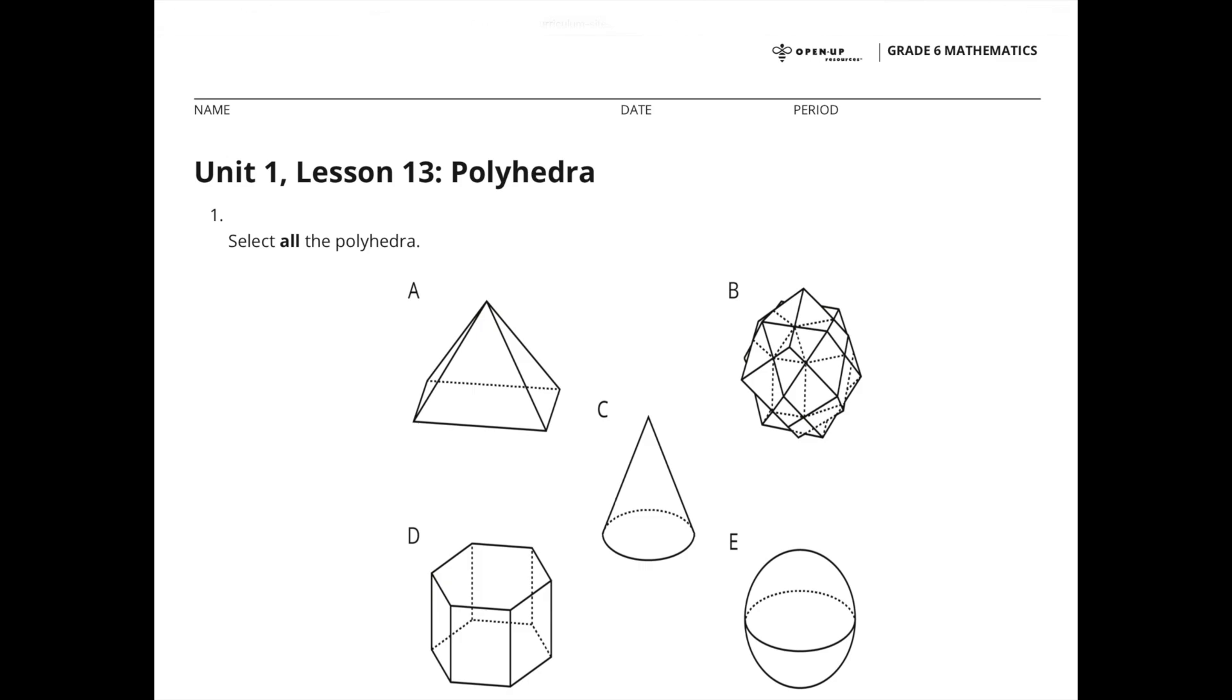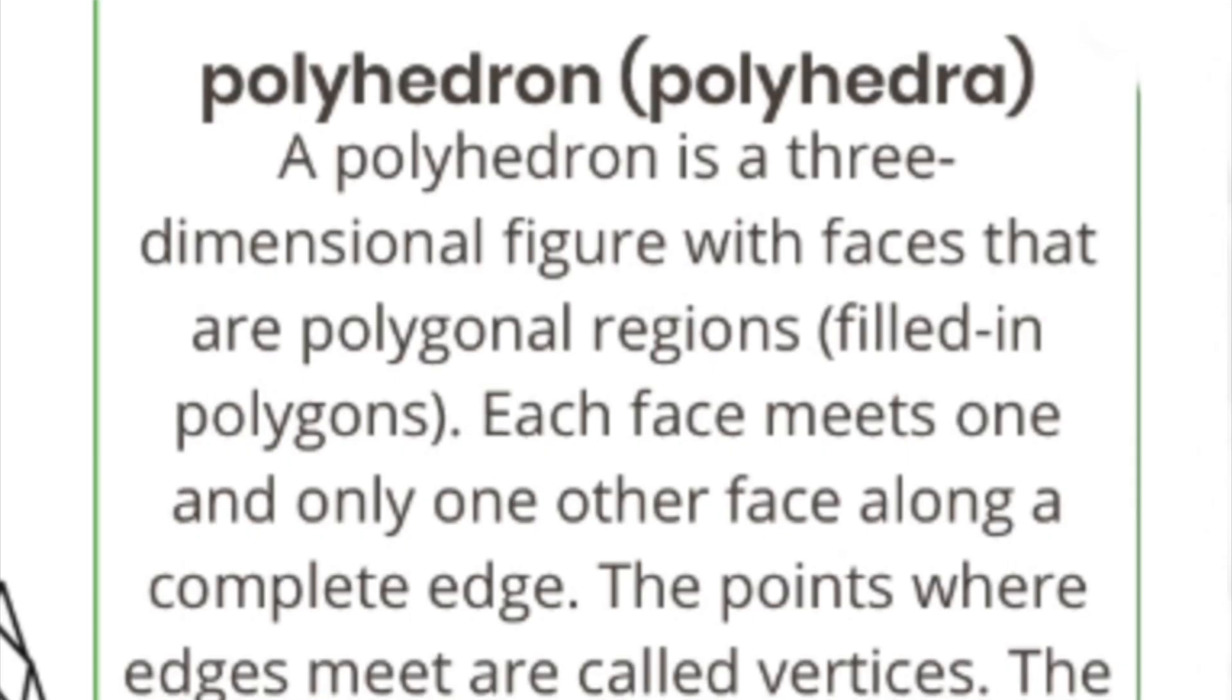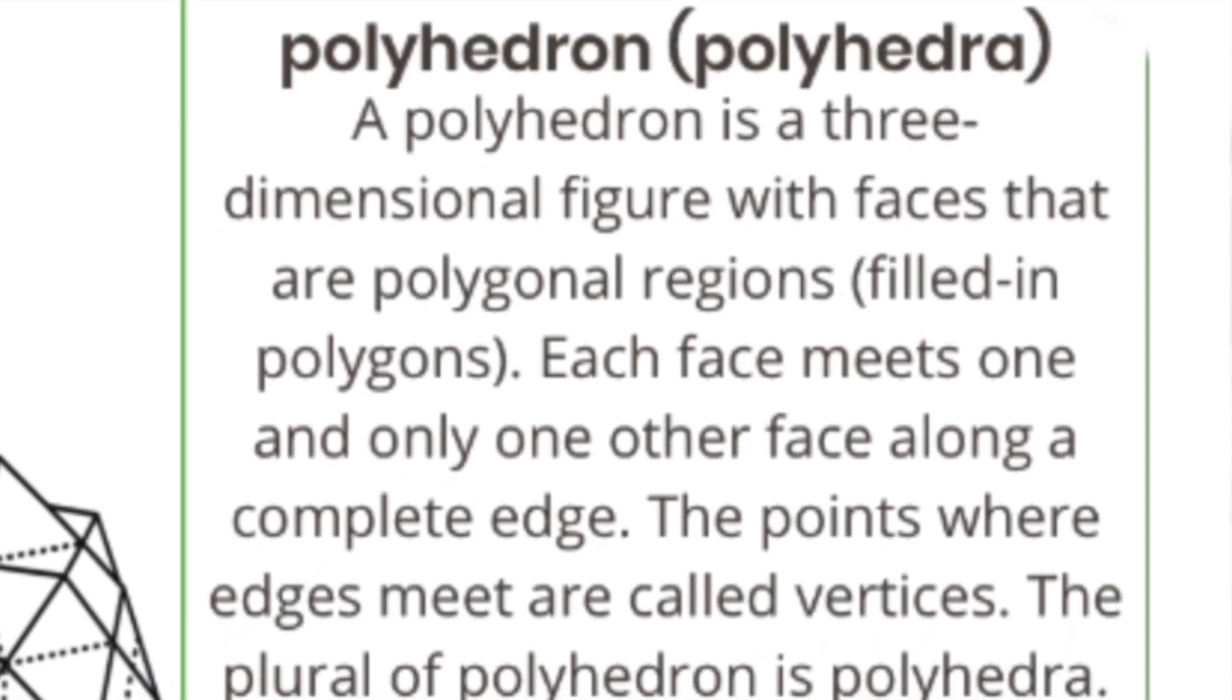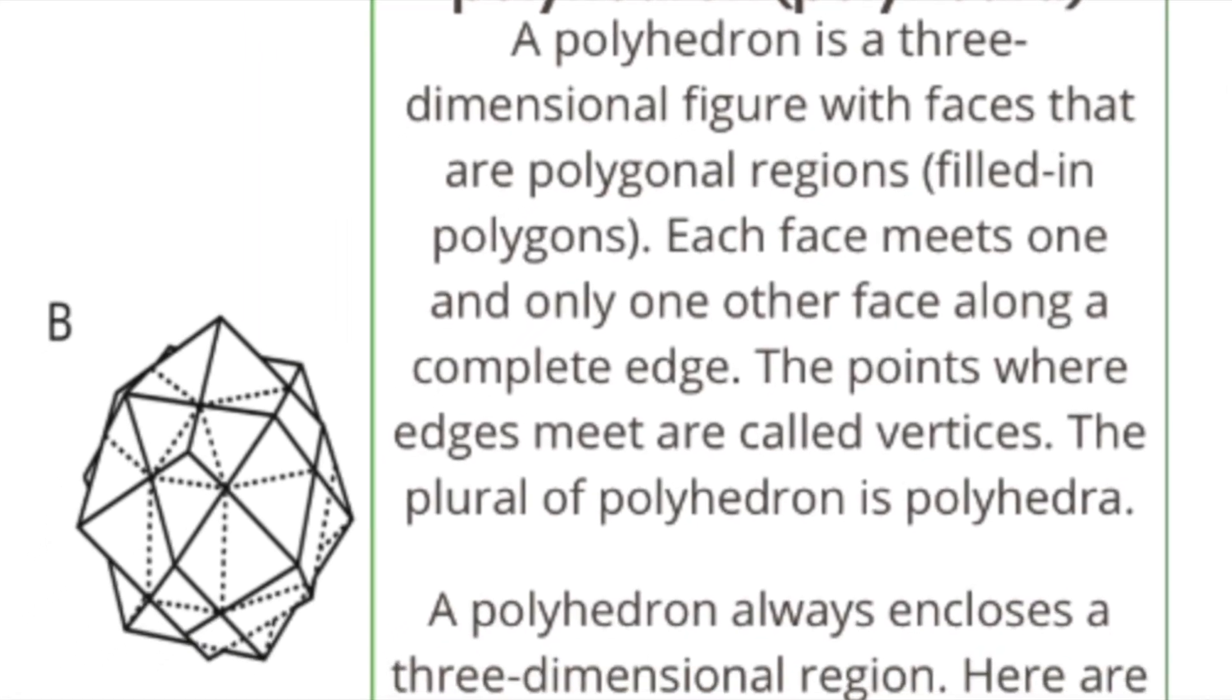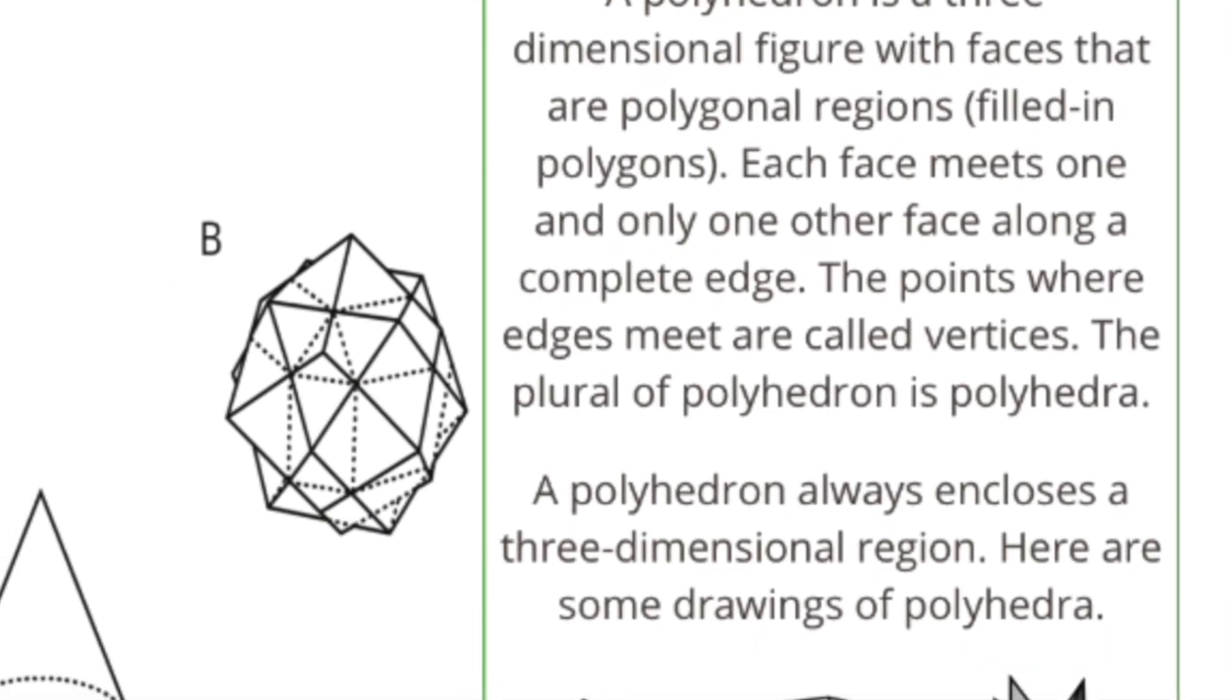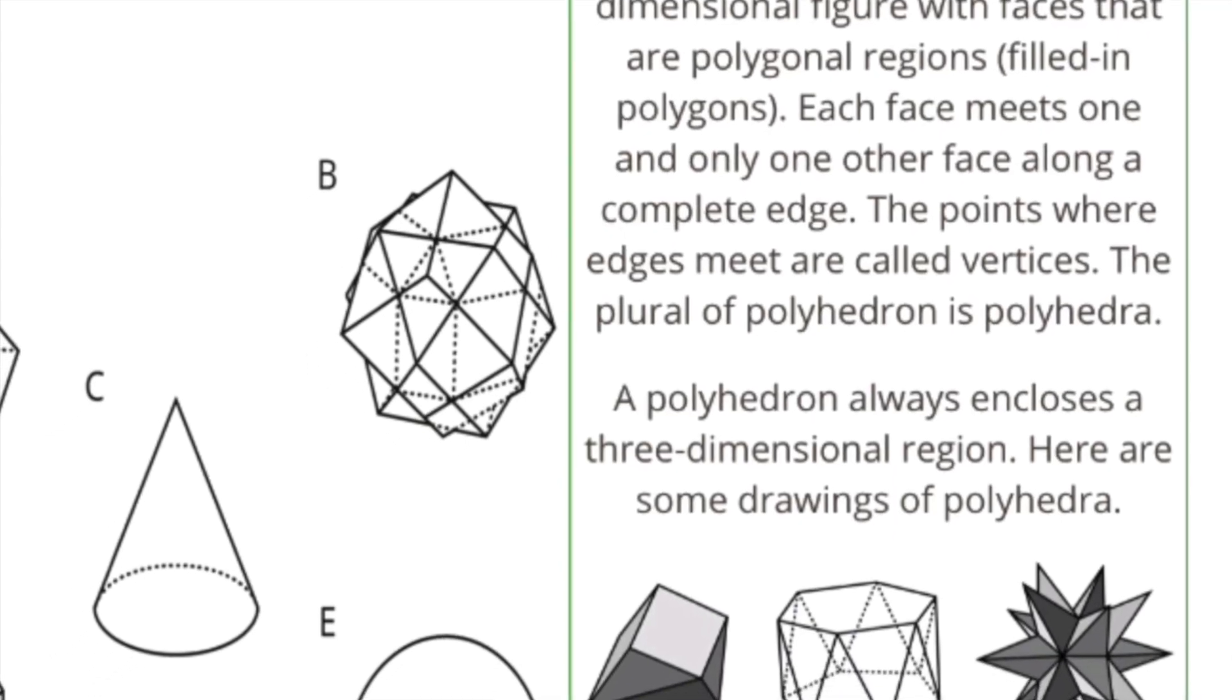6th grade unit 1 lesson 13: Polyhedra. Number 1: Select all the polyhedra. Singular is polyhedron, plural is polyhedra. A polyhedron is a three-dimensional figure with faces that are polygonal regions (filled-in polygons). Each face meets one and only one other face along a complete edge. The points where edges meet are called vertices.